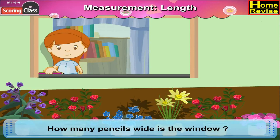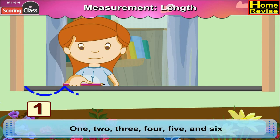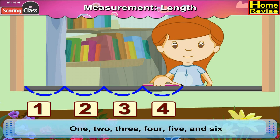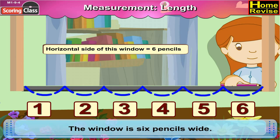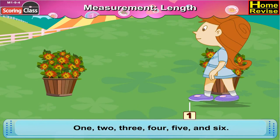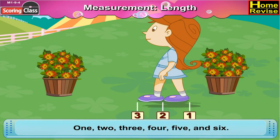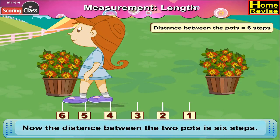How many pencils wide is the window? Let's find out with the help of the pencil: 1, 2, 3, 4, 5, 6. The window is six pencils wide. How many steps is the distance between the two parts? Let's find out: one, two, three, four, five, six. Now the distance between the two parts is six steps.